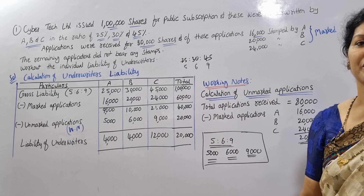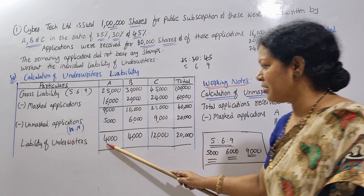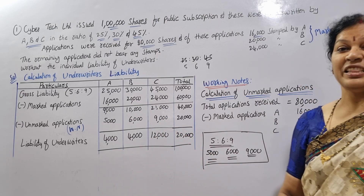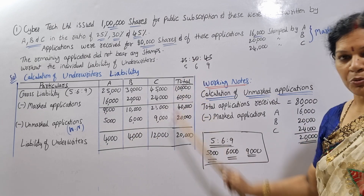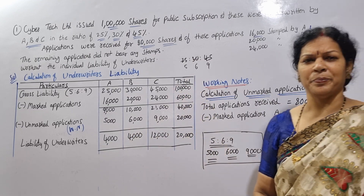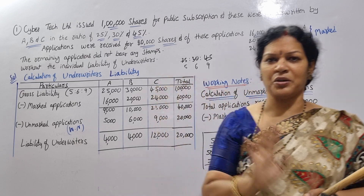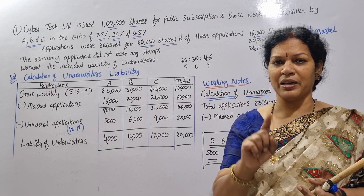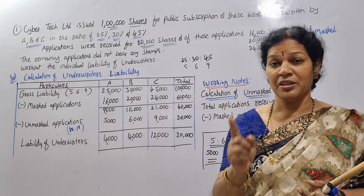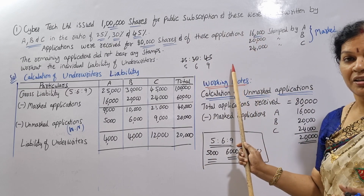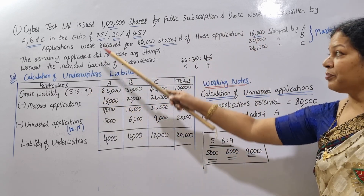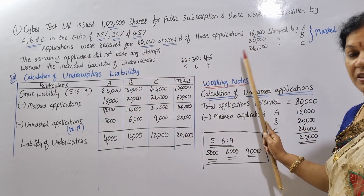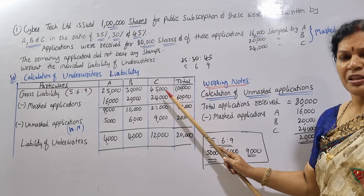After subtracting the unmarked applications from gross liability, we get the net liability of each underwriter: A = 4,000; B = 4,000; C = 12,000. This is the individual liability of each underwriter. We calculated gross liability, minus marked applications, distributed unmarked applications in ratio 5:6:9, and arrived at the final net liability.